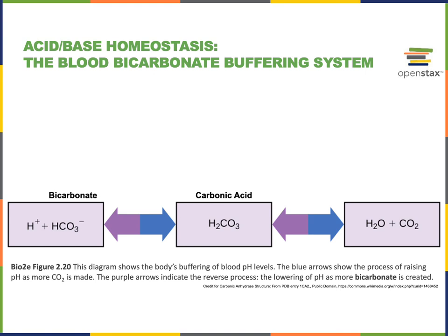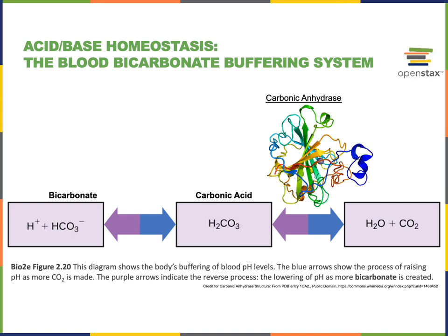The ability of the respiratory system to remove carbon dioxide from the blood enables another major function: acid-base homeostasis. The respiratory system contributes to pH balance by removing carbon dioxide, because carbon dioxide reacts with water in the blood forming carbonic acid, and carbonic acid can release a hydrogen ion into the surrounding solution, lowering the pH. The enzyme carbonic anhydrase is responsible for the interconversion of carbonic acid with water and carbon dioxide.